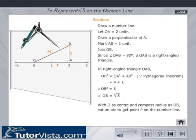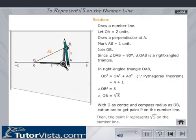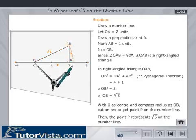With O as center and compass radius as OB, cut an arc to get point P on the number line. Then, the point P represents root 5 on the number line.